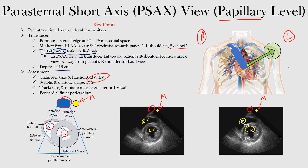We can also assess the systolic and diastolic shape of the intraventricular septum, which is this portion here. Notice that between the right ventricle and the left ventricle, you have the IVS or intraventricular septum. We're at the papillary muscle level, so we can see two papillary muscles: the anterolateral papillary muscle, which is this one here, and then we have the posteromedial papillary muscle, this other one.